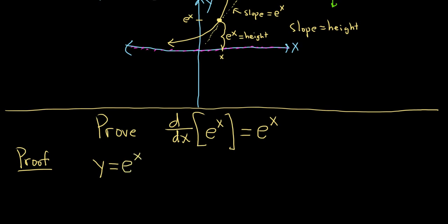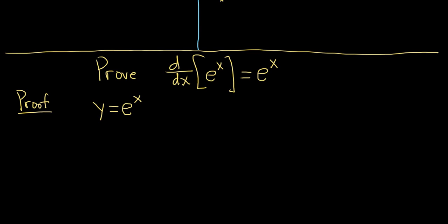We have defined e to the x as the inverse of the natural log of x. So what we'll do is we'll take the natural log of both sides. Taking the log on the left-hand side, we get ln y, and on the right-hand side, we get ln e to the x. E to the x and the natural log of x are inverse functions, so they undo each other. If you take the natural log of e to the x, they cancel, and you just get back x.